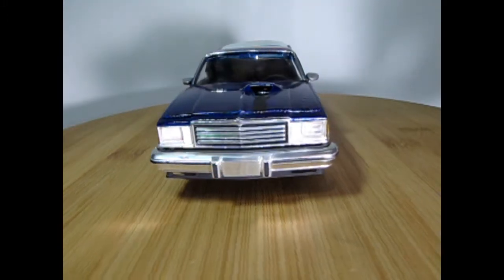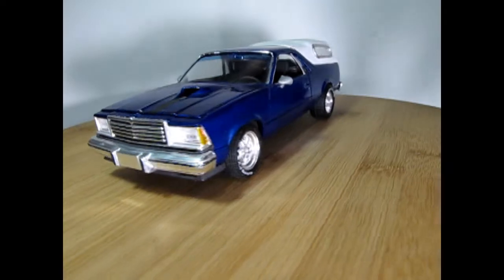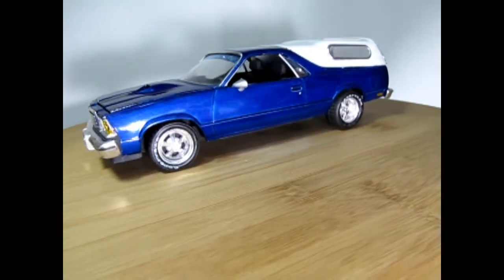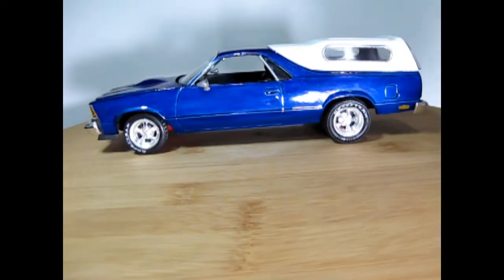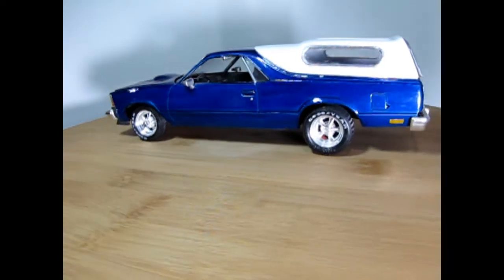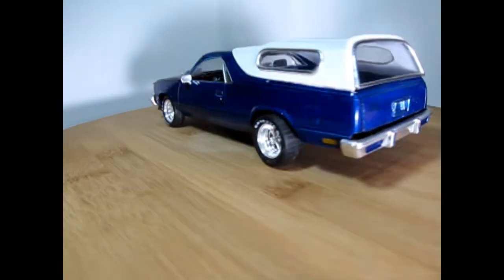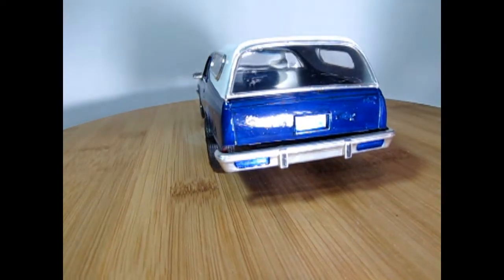Now let's take a look at my El Camino camper build. Now as promised, here is my build of the Monogram 1978 El Camino. And in order to get this nice blue paint job, I painted the car first with some silver paint, which was brush painted on.